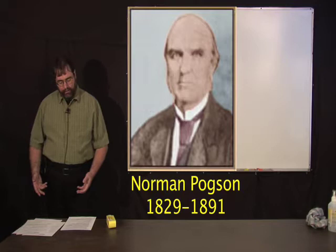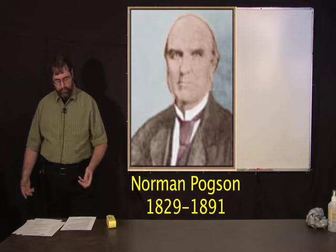the first magnitude stars were about 100 times brighter than the sixth magnitude stars and suggested that the standard for magnitude should be, each magnitude difference should be the fifth root of 100, which is about 2.512, which is known as Pogson's ratio.